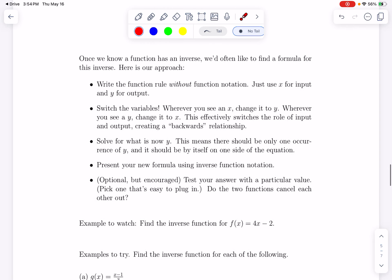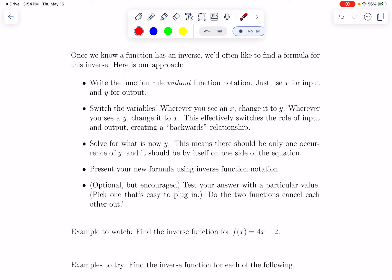So, what did we just do? I wrote the function rule without function notation. I just used y as the name of the output. And then this is what creates that inverseness. We switched the variables. Every x becomes y. Every y becomes x. So, we're swapping input and output. Then we solve for this new y. We present our formula using inverse function notation. And then, hopefully, you test it. You've done all this work. It's pretty quick to test. See if you have it right.